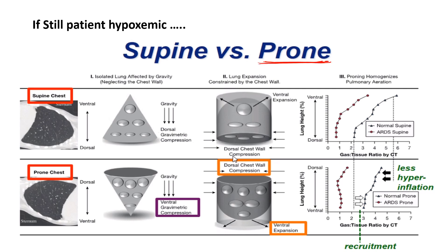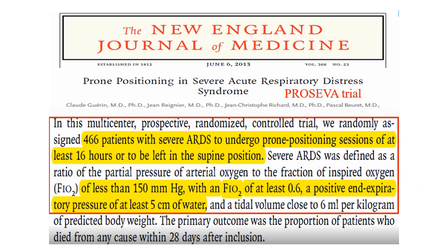If the patient remains hypoxemic despite recruitment maneuvers and driving pressure management, consider prone positioning. In the supine position, the dorsal part of the lung is collapsed due to gravitational compression. In the prone position, gravity shifts and dorsal alveoli become able to open. The PROSEVA trial — 'Prone Positioning in Severe ARDS,' published in NEJM 2013 — recommended at least 16 hours (the speaker states 60 hours) in the prone position. Criteria: PF ratio less than 150 mmHg with FiO2 ≥0.6, PEEP ≥5 cmH2O, and tidal volume close to 6 ml/kg PBW. Results showed very good outcomes.